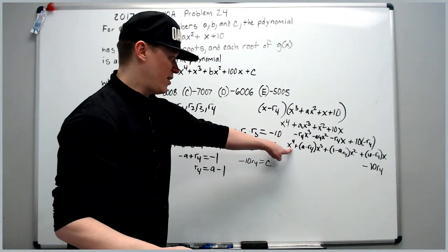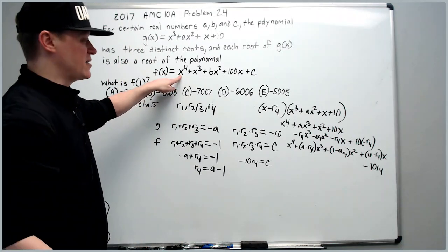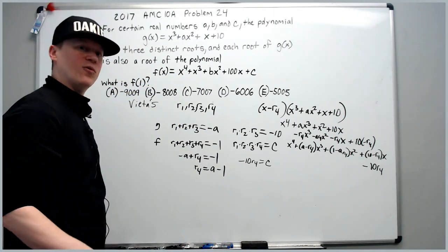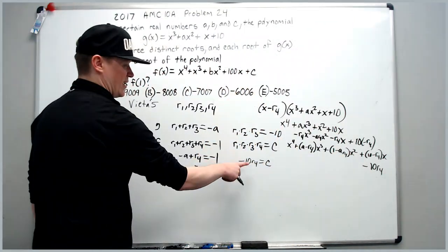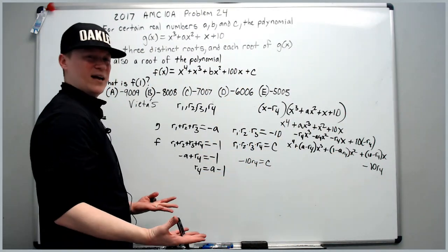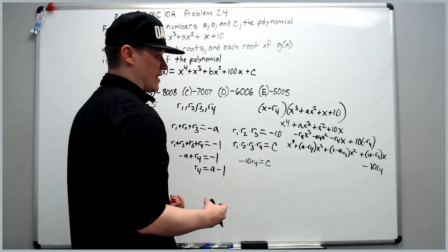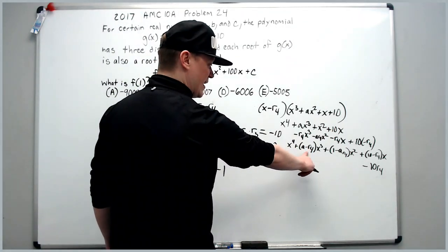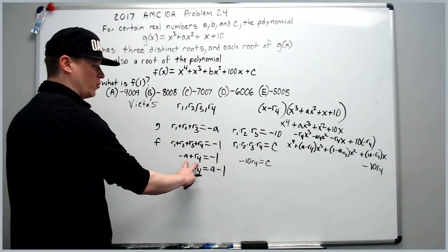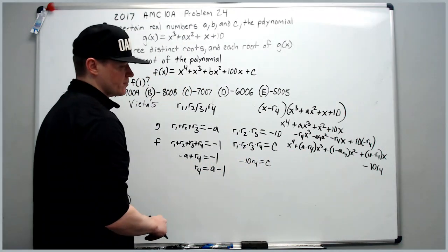This polynomial must match up with f of x, and so we do the comparison game for the coefficients. You'll notice that c is negative 10 r4, which we already found. Okay, so we didn't mess that up. You'll also notice that the sum of the roots is negative a plus r4, which we already knew.